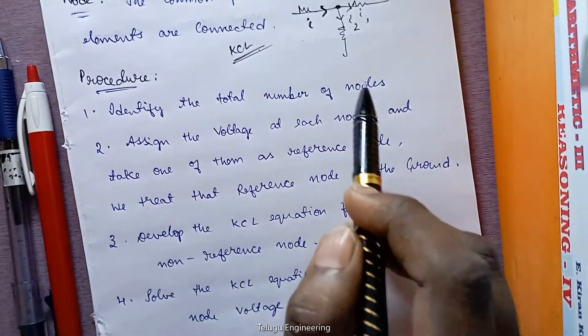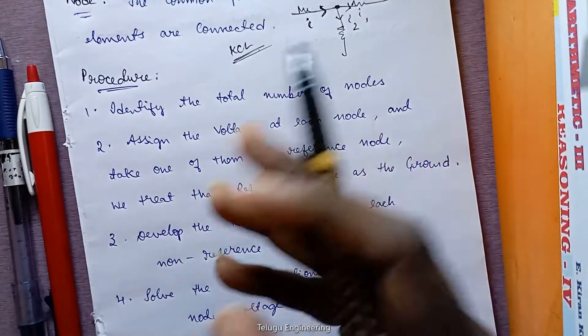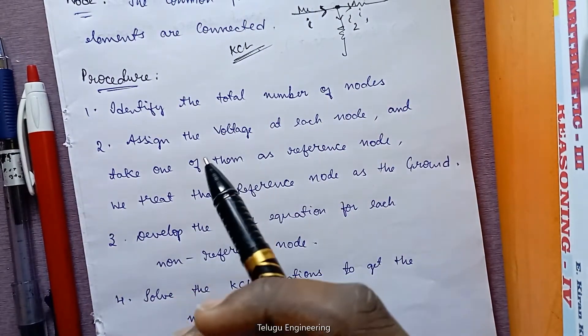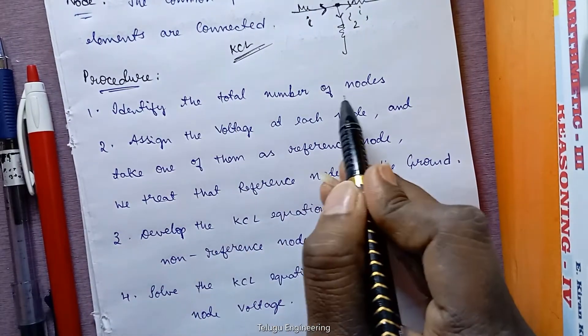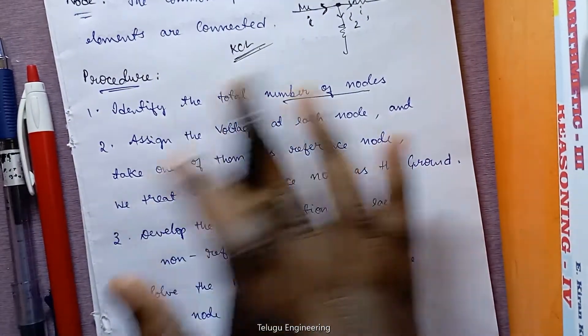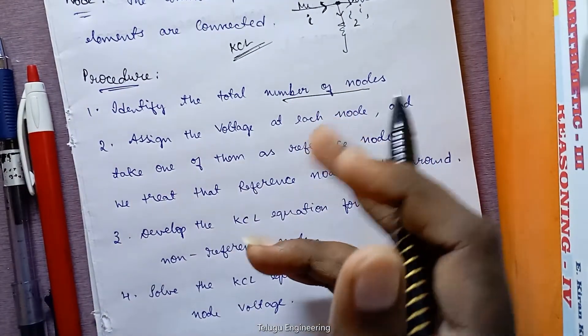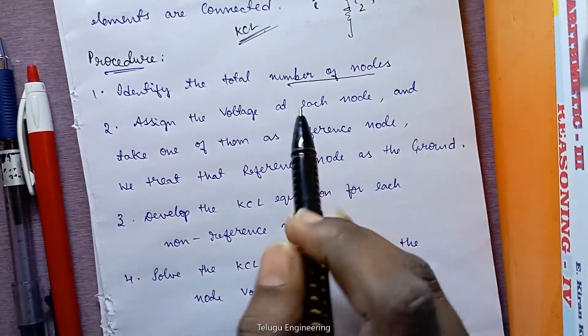Identify the number of nodes. In this circuit, they will ask you to find the node voltages, the node currents, by using nodal analysis. So the first step is you are supposed to identify the number of nodes. Total number of nodes. First identify the nodes. Next, assign the voltages at each node.